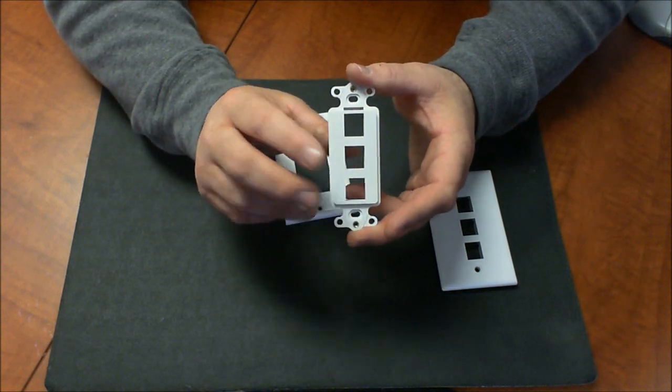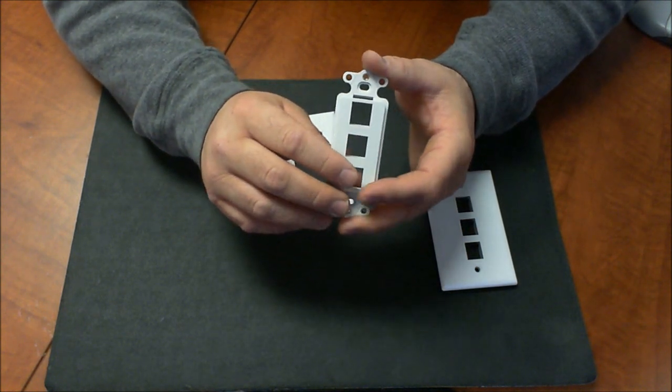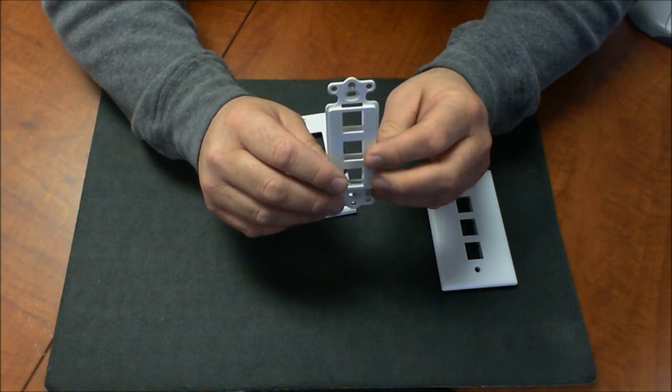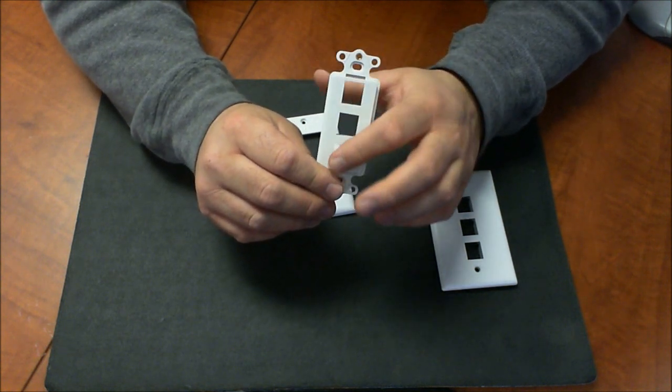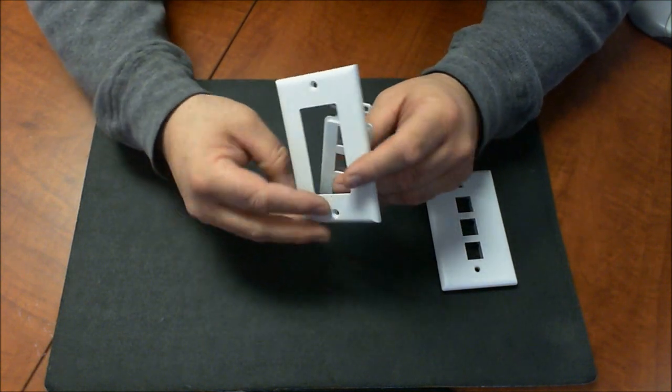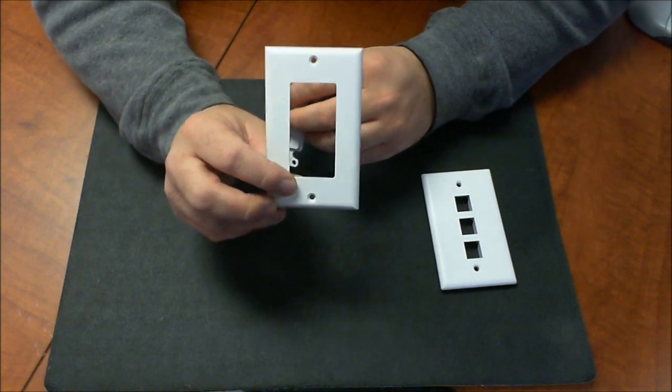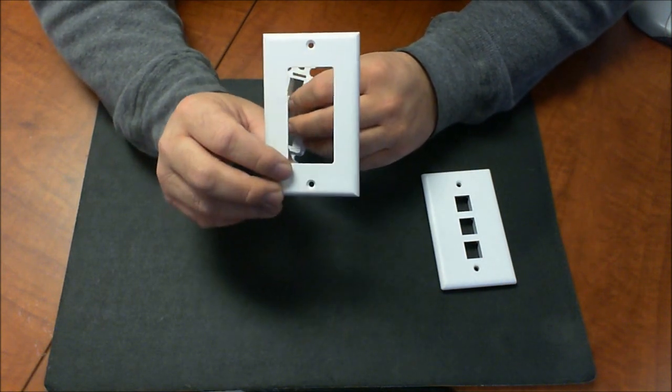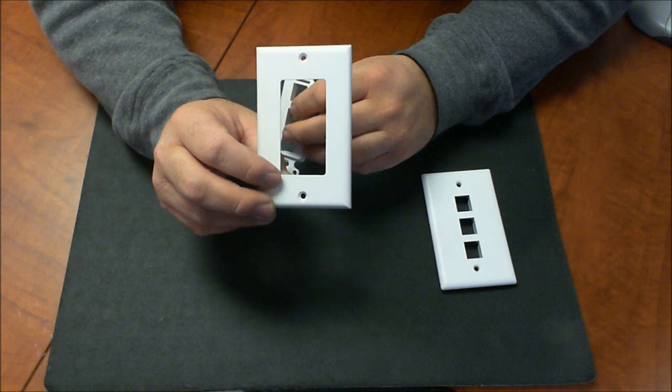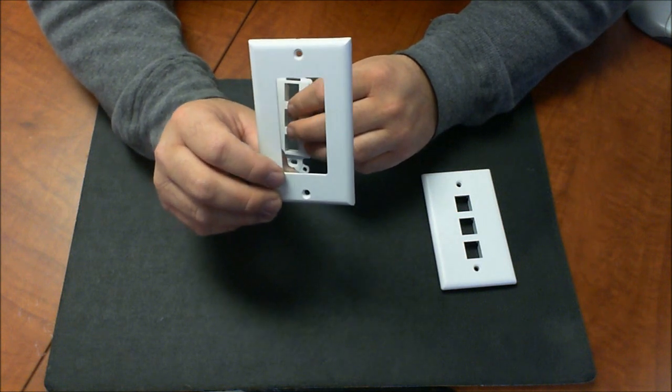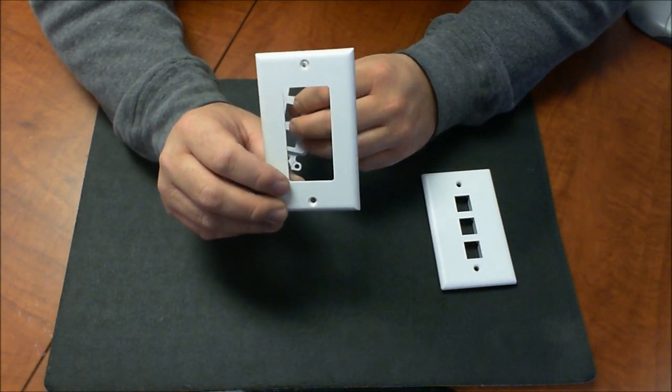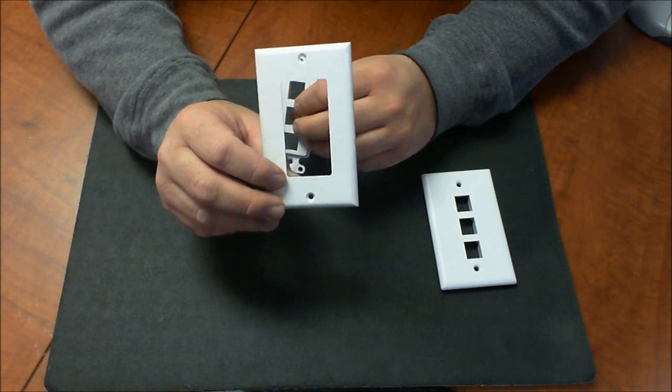You're going to install your inserts in there and then you're going to trim it out with the actual faceplate and the faceplates also come in ones and in threes and fours. So really you can create the connection you need and configure your plates any way you need.